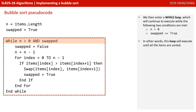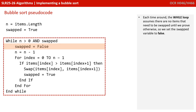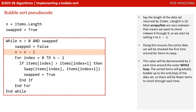We then enter a while loop which will continue to execute while two conditions are met: n is greater than zero, and swapped is equal to true. In other words, this loop will execute until all the items are sorted. Each time around, the while loop assumes there are no items that need to be swapped until we prove otherwise, so we set the swapped variable to false. If the length of the data set is 10, and most arrays or lists are zero indexed, we want to check indexes 0 through 9, so we set n to n minus 1. This value will decrement by one each time around the outer while loop, as sorted items gradually bubble up to the end of the data set, meaning fewer items need to be checked each time.